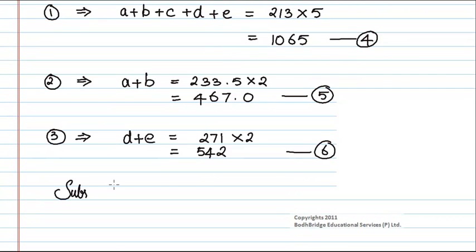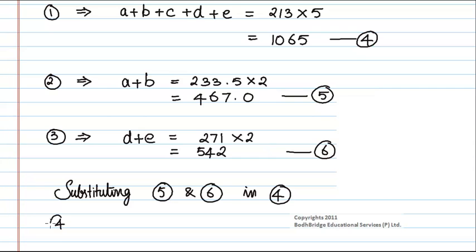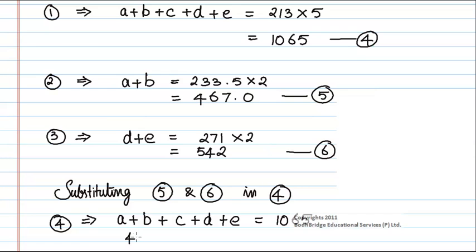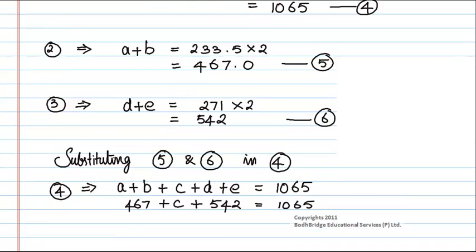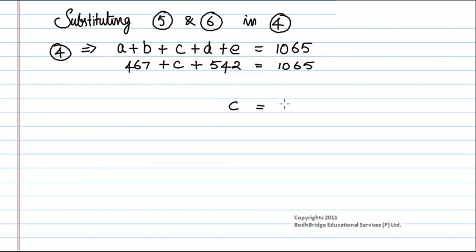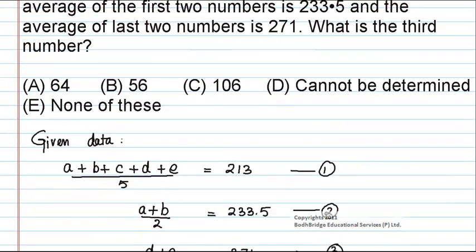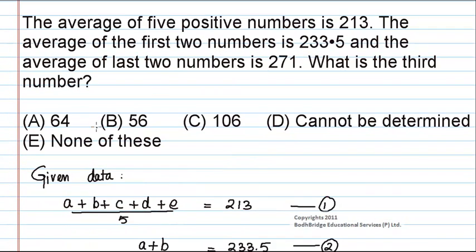Substituting equations 5 and 6 into equation 4: A plus B plus C plus D plus E is equal to 1065. Here A plus B is 467, and D plus E is 542. So 467 plus C plus 542 equals 1065. After solving this equation we get C is equal to 56. So the third number is 56, and from the options given, option B, 56, is the correct answer.